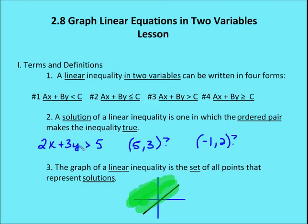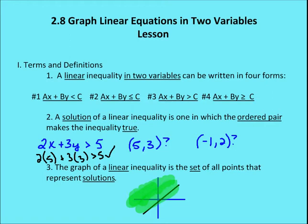I have 2X plus 3Y greater than 5. I want to see if (5, 3) is a solution. I plug in 5 for X and 3 for Y: 2 times 5 plus 3 times 3 gives 10 plus 9, which is 19. That is greater than 5, so (5, 3) is a solution of the linear inequality.